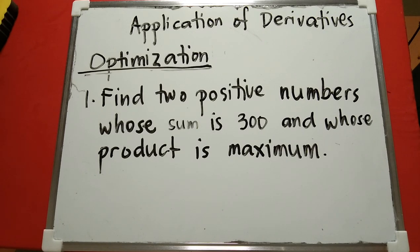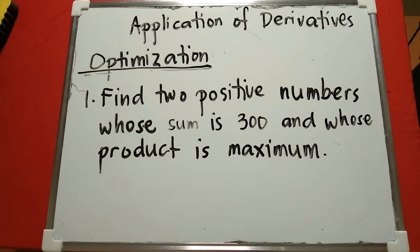Welcome back to my channel. Today let's talk about application of derivatives — specifically optimization problems. In this lesson we will be determining the absolute minimum or maximum of a function that depends on two variables, given some constant relationship that the two variables must always satisfy. We'll discuss several methods for finding these absolute extrema.